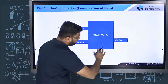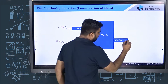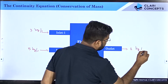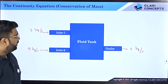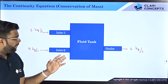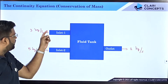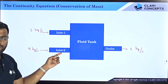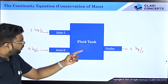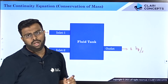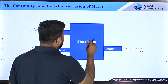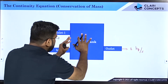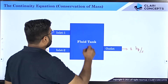The tank has one outlet, and the fluid is coming out at a rate of one kilogram per second. Now if you look at the entire setup: every second, three kg is getting in from inlet one, five kg is getting in from inlet two, and one kg is coming out every second. Now the question is: what is the change in the mass of this fluid tank? How much mass is accumulated every second in this tank?